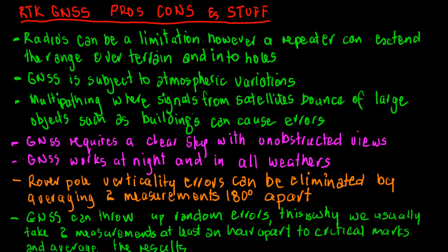GNSS requires a clear sky with unobstructed views. So there are circumstances where the view may be obstructed so that certain satellites or sufficient satellites cannot be seen, and there's also ones where the obstructions cause multipathing. On the other hand, of course, GNSS works at night and in all weathers, although the data recorder can be a little bit susceptible to dampness. But usually if it's in good condition and has been serviced that should not be a problem.